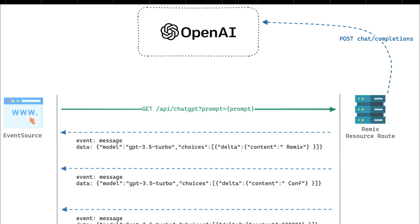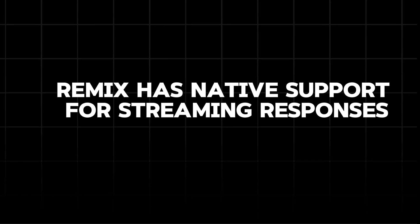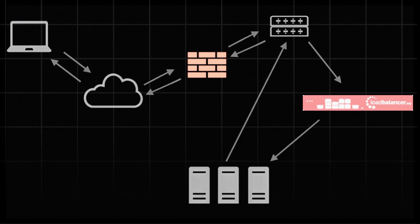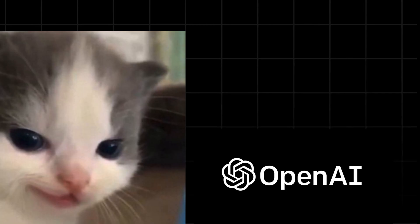With Remix, they could stream data right from the server without waiting for everything to be processed. It's like when you're chatting with ChatGPT — you're not waiting for a full response to be written. Remix has native support for streaming responses directly from server routes. OpenAI just needed something better for handling these dynamic, real-time interactions with users.